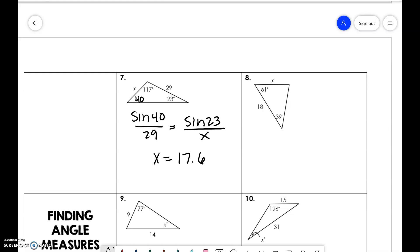And the last one for finding side lengths, 180 minus 61 minus 39 is 80. So sine of 39 over x is equal to sine of 80 over 18. And x would be 11.5.